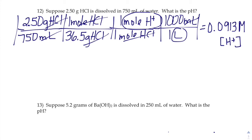That's the H⁺ concentration. So if you know the H⁺ and you want to get the pH, that's where you do that negative log thing. So we're gonna do the negative log of 0.0913.